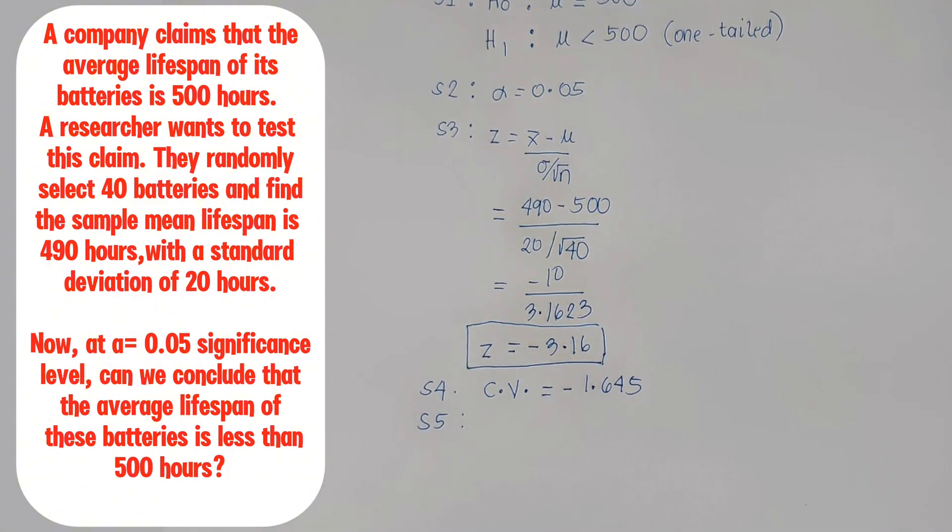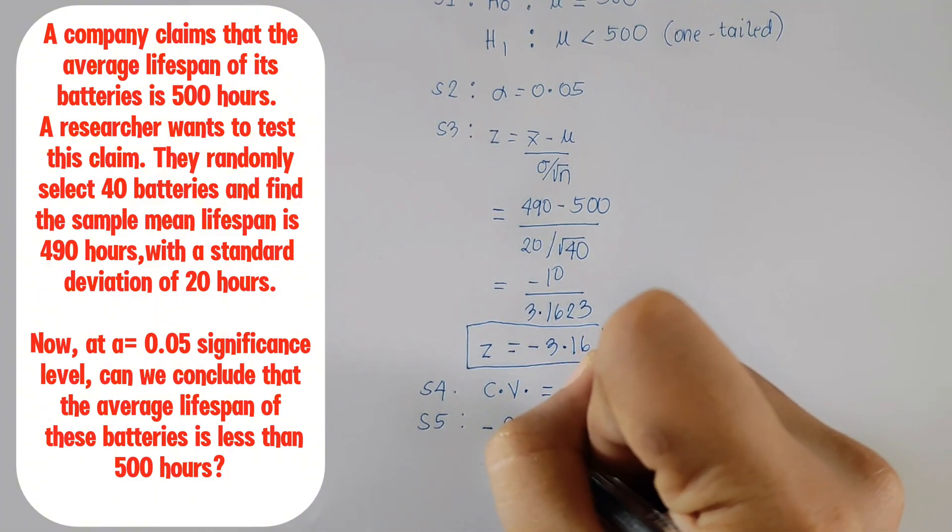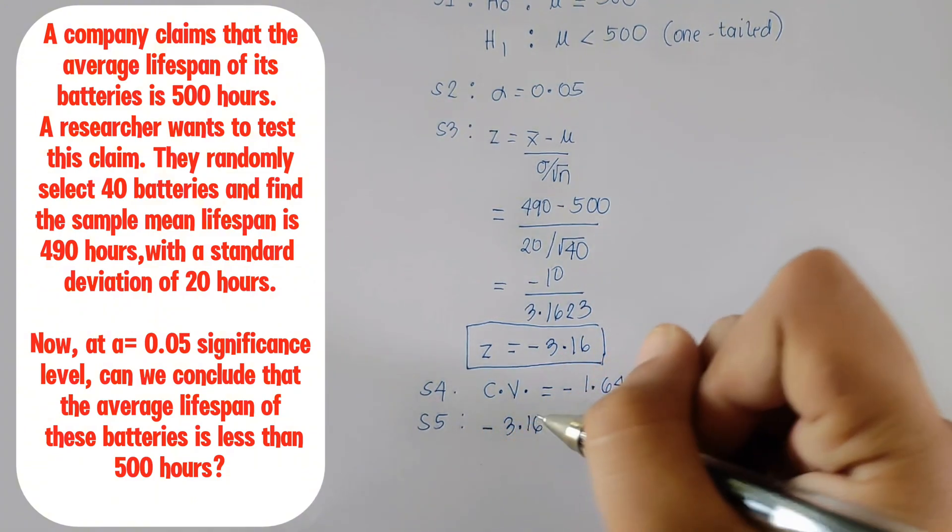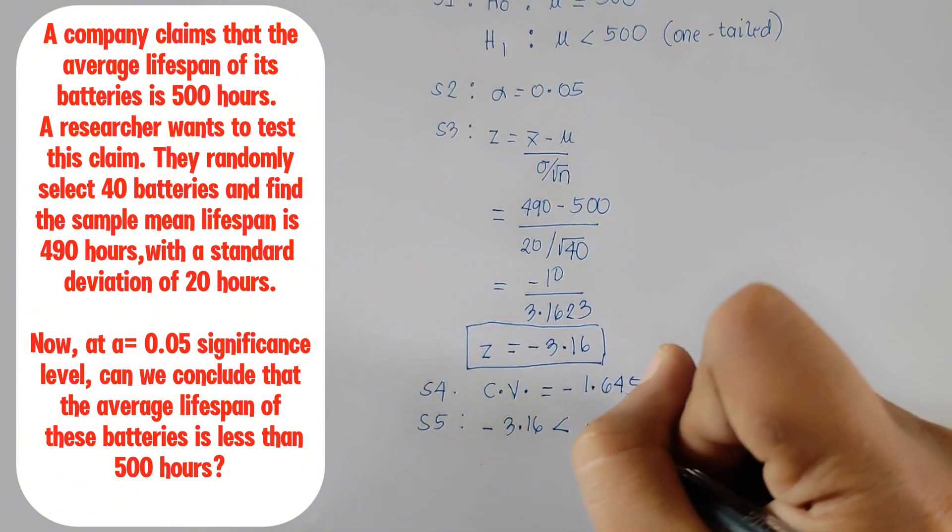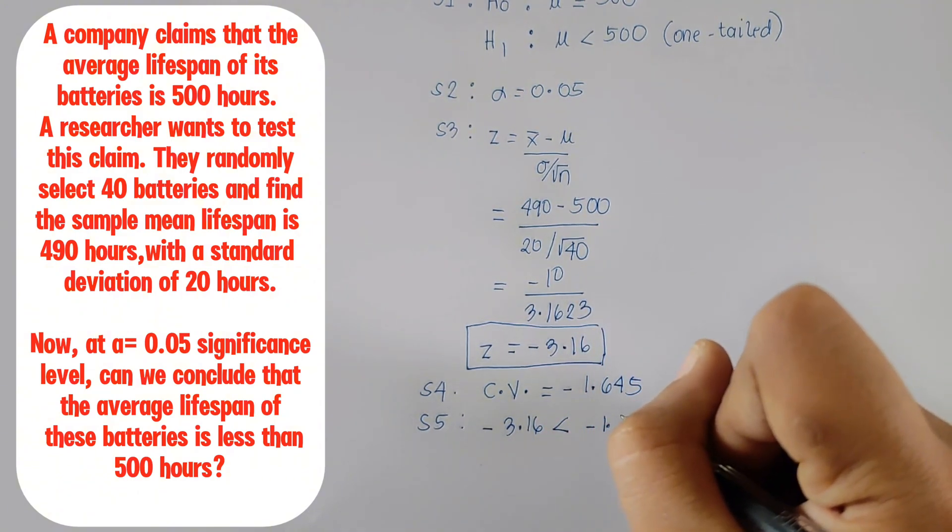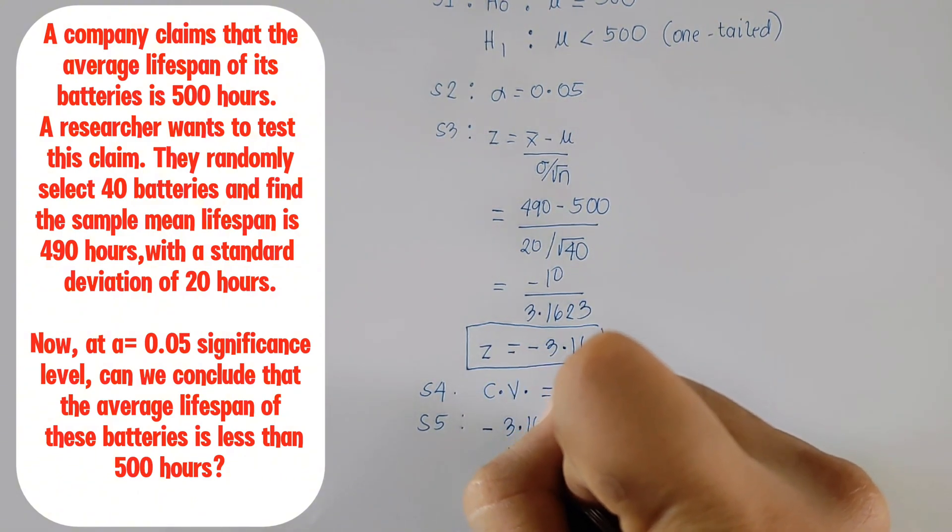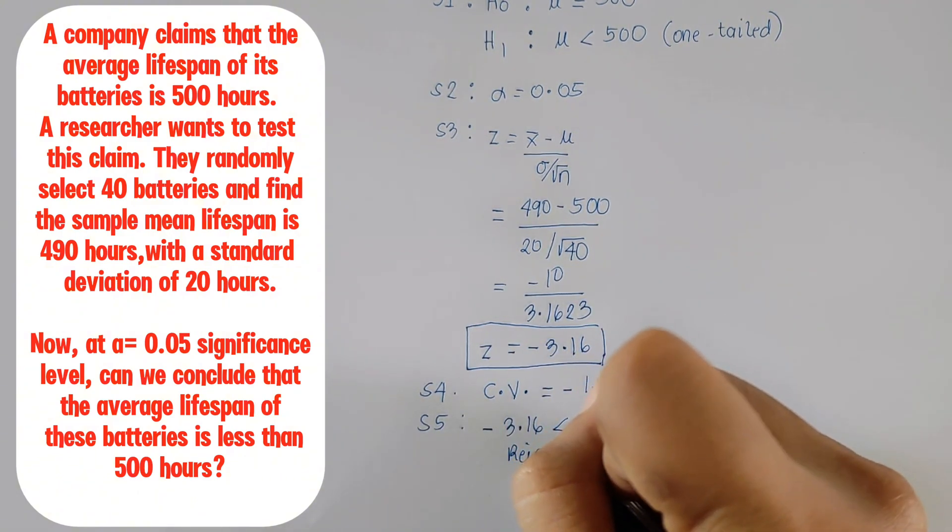Step 5. Now, compare the test statistic. Z equals negative 3.16 to the critical value negative 1.645. Since our computed Z value negative 3.16 is less than the critical value negative 1.645, we reject the null hypothesis.